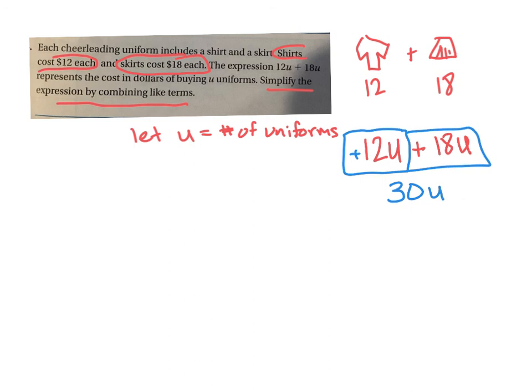That's your simplified version — 30U. You cannot get a specific answer yet because we don't know how many uniforms will be bought. When someone says you're buying 10 uniforms, plug in 10 for U and do the multiplication — $300. Most of your problems do the translation, but please take the time to see how they got the expression from the problem. It will make things easier later, I promise. Good luck — go get them.